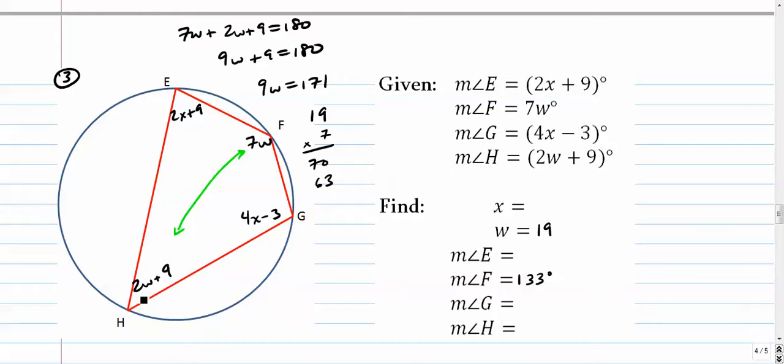And angle H is 2 times 19. 2 times 19 is 38. Plus 9 is 47. And that's angle H.